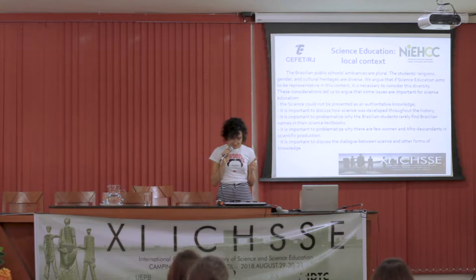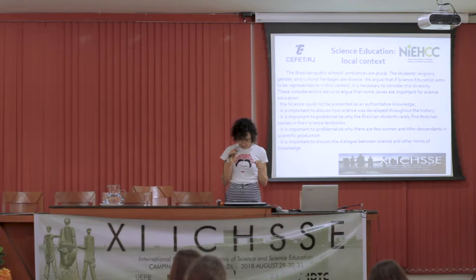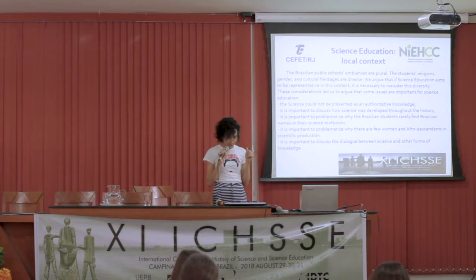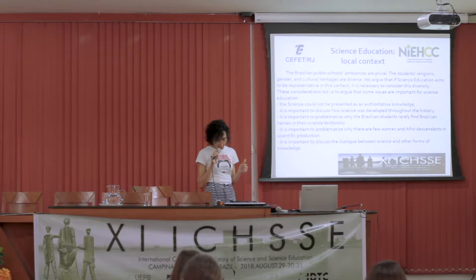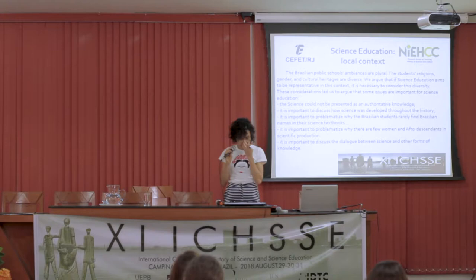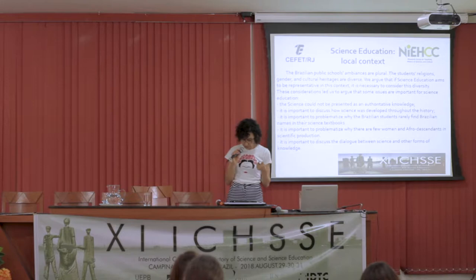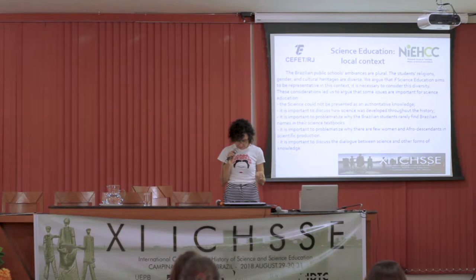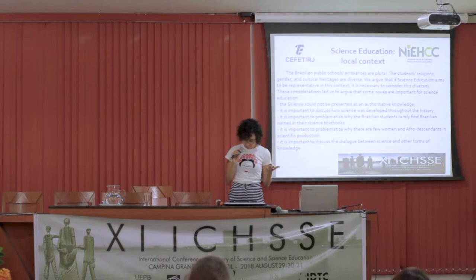We argue that if science education aims to be representative in this context, it is necessary to consider this diversity. This consideration led us to note that the following goals are very important for science education. First, science cannot be presented as unquestionable and authoritative knowledge. It is important to discuss how science was developed through history, and to problematize why Brazilian students rarely find Brazilian names in their science textbooks. The few presence of women and Afro-descendants in scientific production throughout history also has to be problematized.